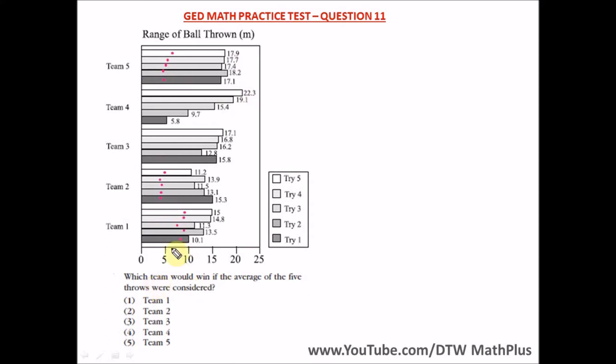So we've interpreted this diagram. From here you also see the range of the throw in meters — we have 0 to 25 meters. The first question says: which team would win if the average of the 5 throws were considered?